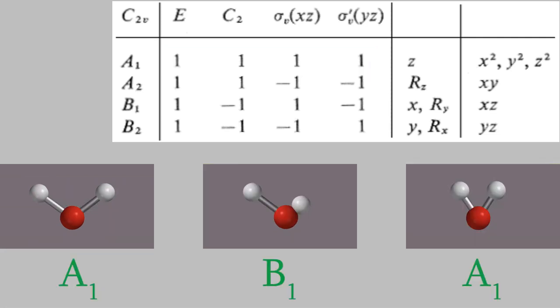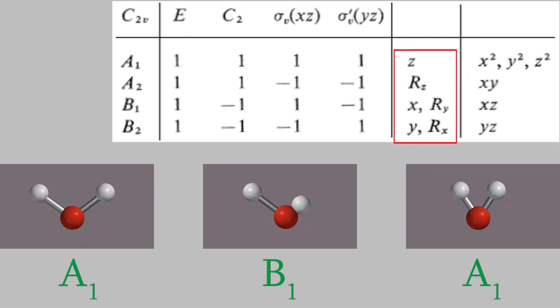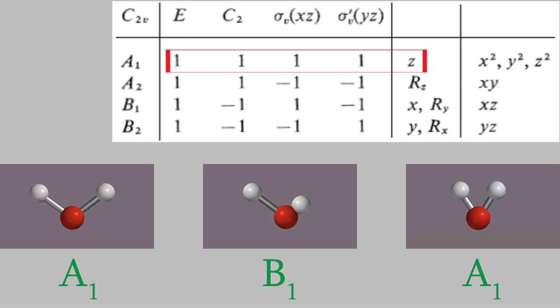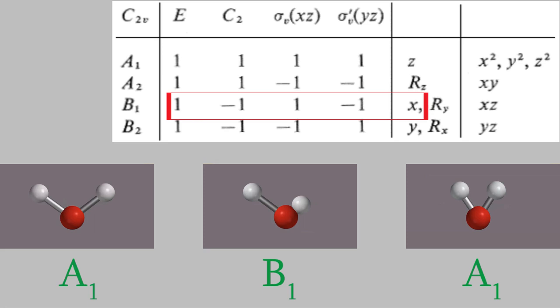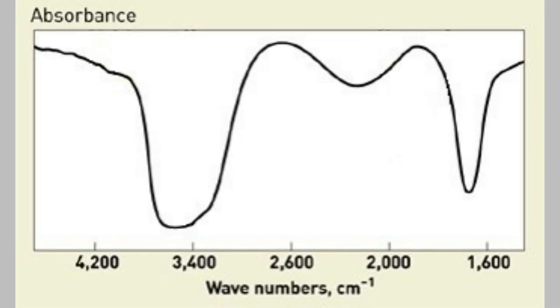So now we know the character of each of the vibrations that water can undergo. What can we do with that information? That's where the last part of the character table plays a role. It turns out that if a vibration causes a change in the electric dipole moment, there will be a letter X, Y, or Z in this column of the table. So, for example, the symmetric stretch and bending vibrations are in this row, and that row has a letter Z in that column of the table. That means those vibrations do appear in the infrared spectrum. The same is true for the asymmetric stretching vibration — there's a letter X in that column of the character table. That tells us that all three vibrations are expected to appear in the IR spectrum, and that's exactly what we see.